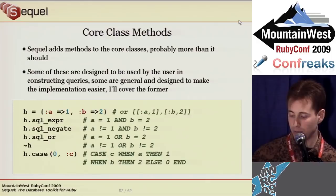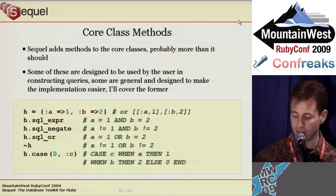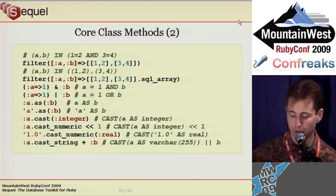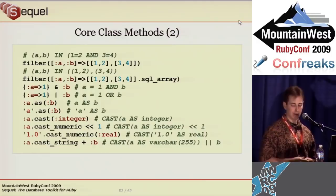Sequel adds methods to Ruby core classes. Most of these implement Sequel's DSL. Hashes and arrays of all two-element pairs are used to specify conditions; by default, condition entries are ANDed together. However, you can use SQL.OR to OR the entries, SQL.negate to AND the negation, and the bitwise negation operator to invert conditions. The case method returns an SQL CASE statement, useful for conditional sums and other things. Since Sequel usually treats arrays of two-element pairs as conditions, you have to call the sql_array method if you want to treat it as an array. The as method is used to set up aliases, and there are a few methods related to casting values — the cast methods can take Ruby classes, similar to how database types are handled in schema methods.